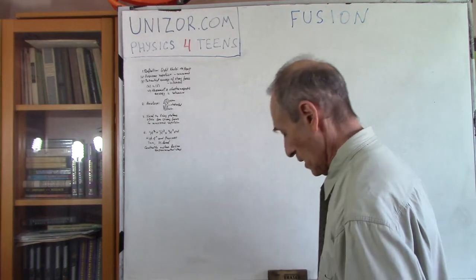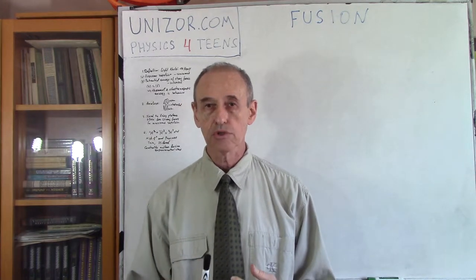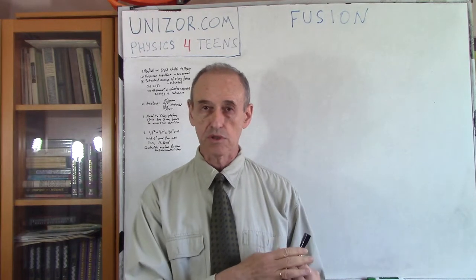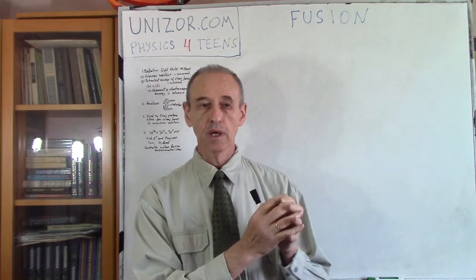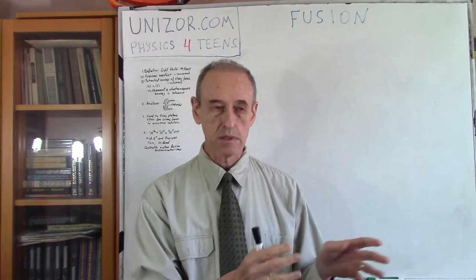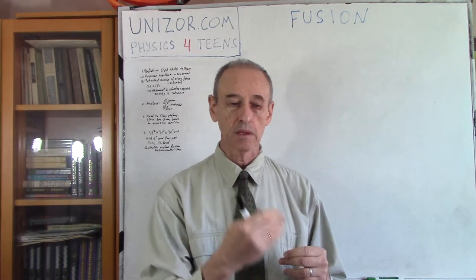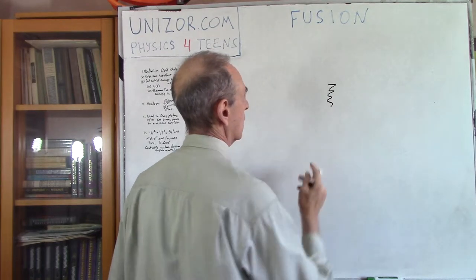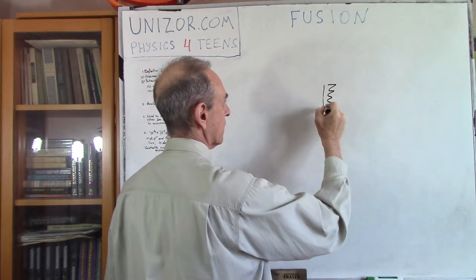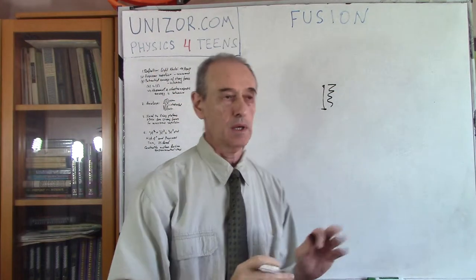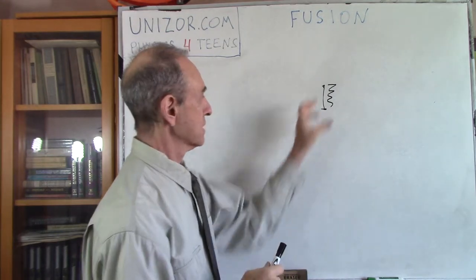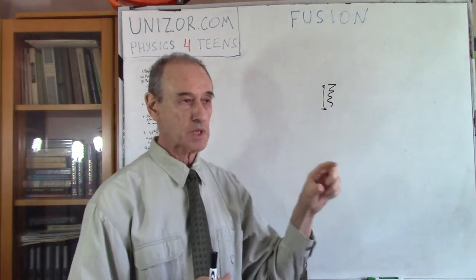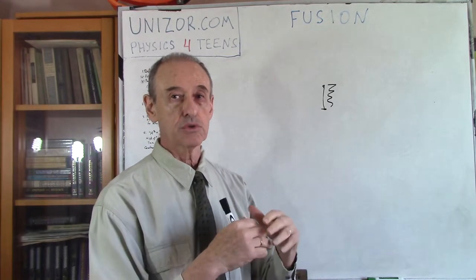So let's go for the fusion. First of all, what is a nuclear reaction which we call fusion? The first reaction we were talking about was fission — that's when we are splitting a heavy nucleus into parts, and during this reaction energy was released. We were using a simple analogy: if you have a spring and you squeeze it and put some kind of thread on both ends so it doesn't go back to a neutral state, this spring has potential energy.